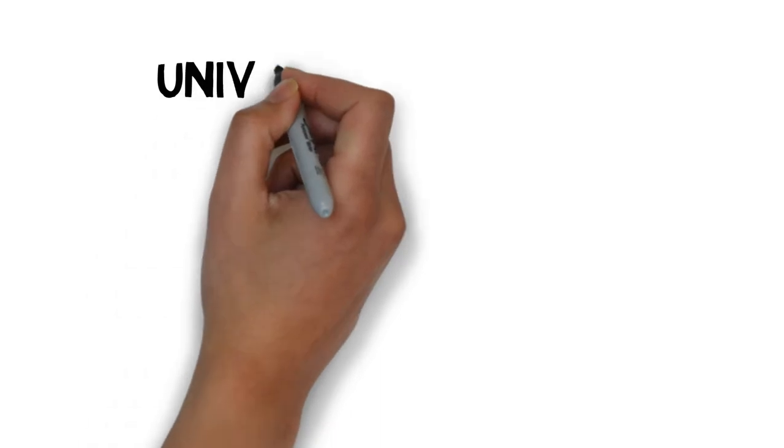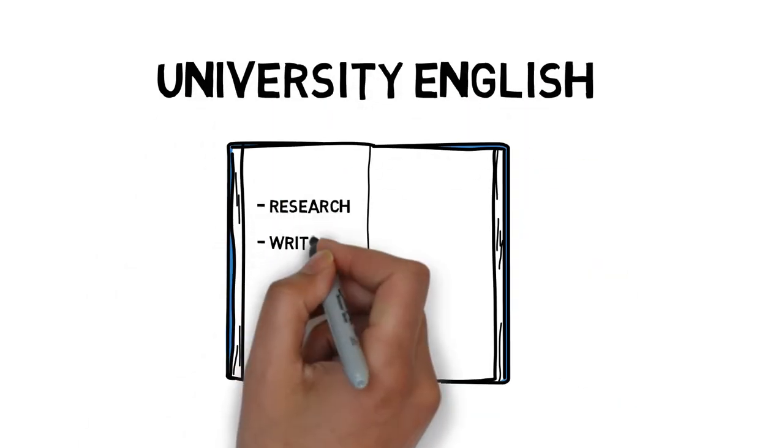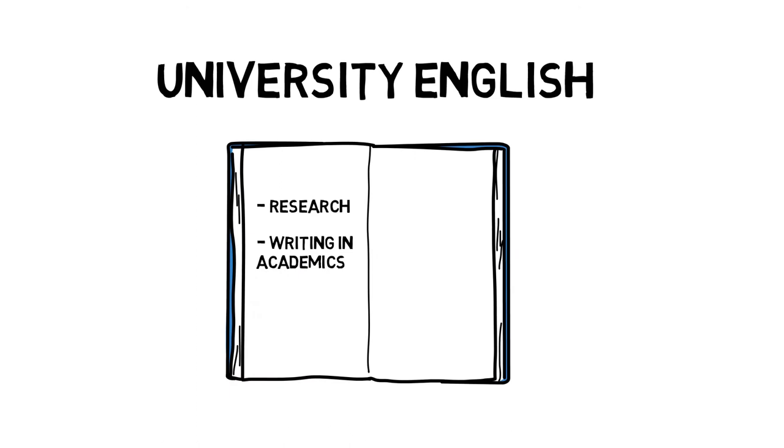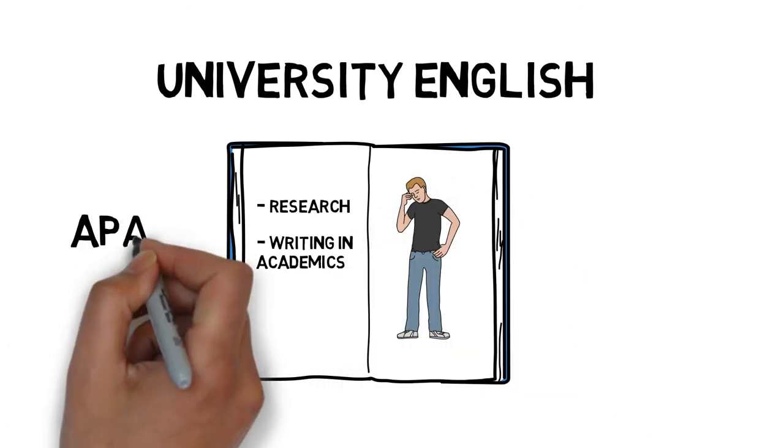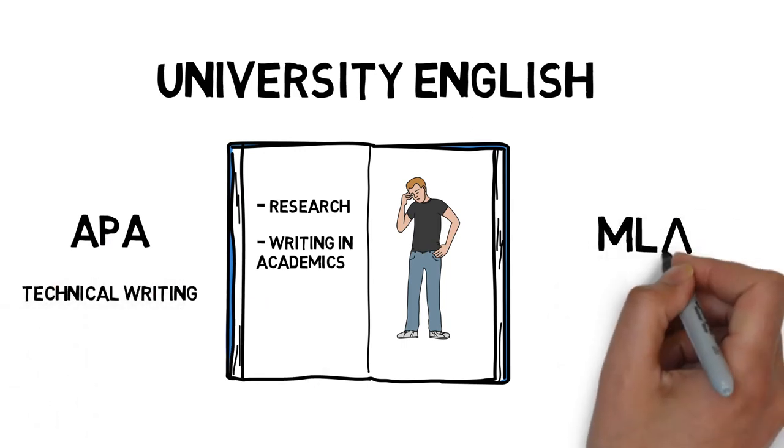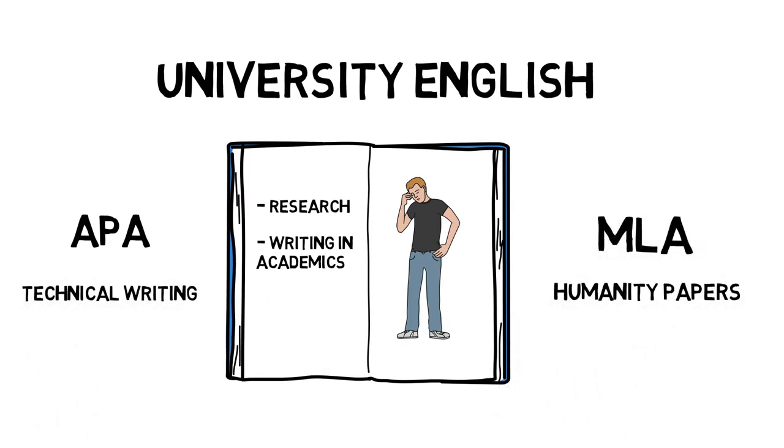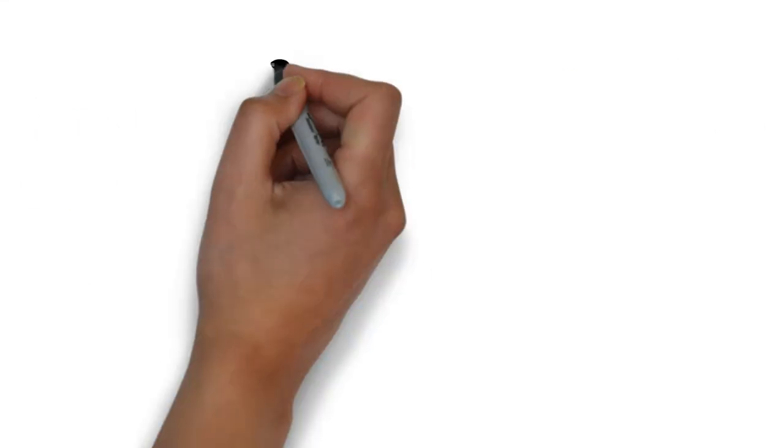Other courses you need to take in your first year, so you also need to take University English, which focuses on research and writing in academics. I don't really remember what I've learned in this class, other than use APA citation format for technical writing, and MLA format for humanity papers, and if that's not right, then I've learned nothing from that class.